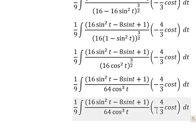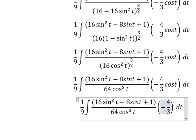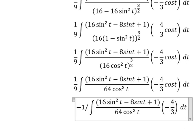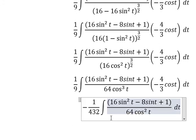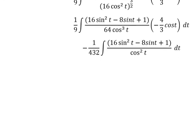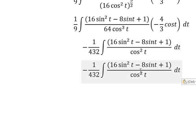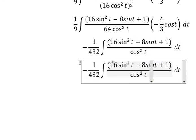Now we need to simplify: cos(t) divided by cos(t) cancels out. Combining the constants 1 over 9, 64, and negative 4 over 3, we put the product outside the integral and get negative 1 over 432.